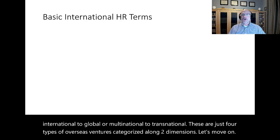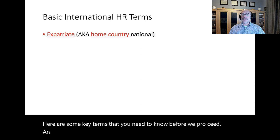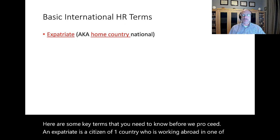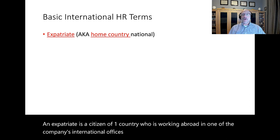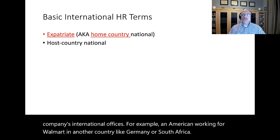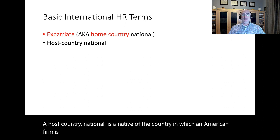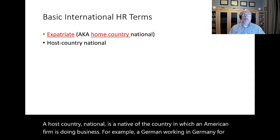Here are some key terms you need to know before we proceed. An expatriate is a citizen of one country who is working abroad in one of the company's international offices — for example, an American working for Walmart in another country like Germany or South Africa. A host country national is a native of the country in which an American firm is doing business — for example, a German working in Germany for Walmart, which is an American company.